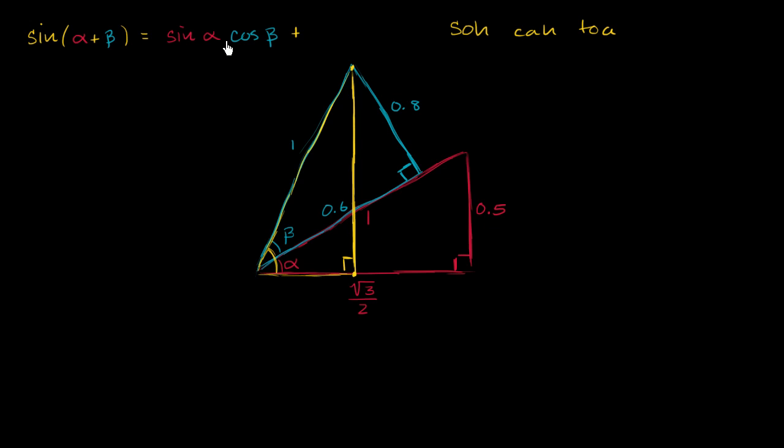plus the other way around. The cosine of alpha times the sine of beta. Let me draw a line here so we don't get confused.